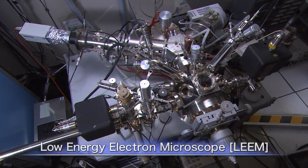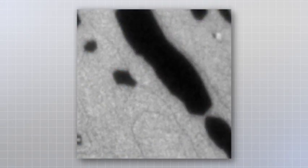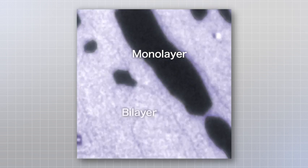When viewed through a low energy electron microscope or LEAM, it is possible to accurately determine the number of epitaxial graphene layers.